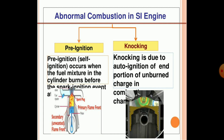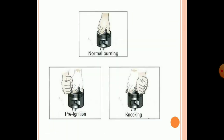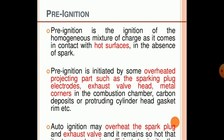In normal combustion, pre-ignition occurs when the fuel mixture in the cylinder burns before the spark ignites it. Knocking is due to auto-ignition of the end portion of the unburned charge in the combustion chamber. Pre-ignition heats the piston, and an audible sound — knocking — is generated from the combustion chamber and piston. Pre-ignition is the ignition of the homogeneous mixture of charges as it comes in contact with hot surfaces in the absence of a spark.